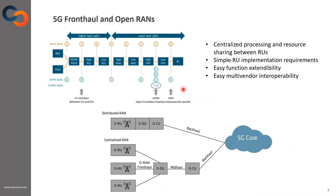ORAN Alliance has defined the split option 7 to X of base station functionalities. This split option offers multiple advantages, some of them listed on the right. It offers centralized processing of functionalities that allows resource sharing between radio units, enabling simpler radio unit implementations and extendability of functions, and easy multi-vendor interoperability. Because of this split option, the base station is divided into a radio unit implementing lower physical functions and a distributed unit implementing higher physical functions, with the ORAN fronthaul as the interface between them.